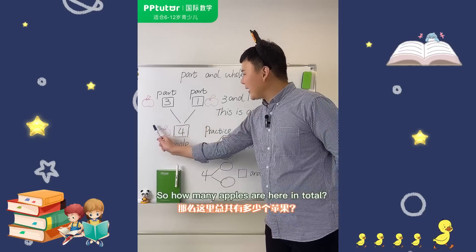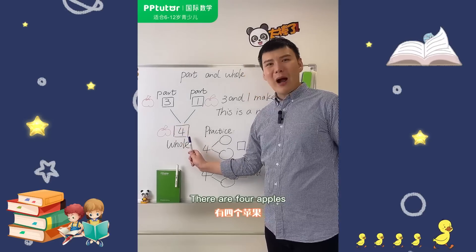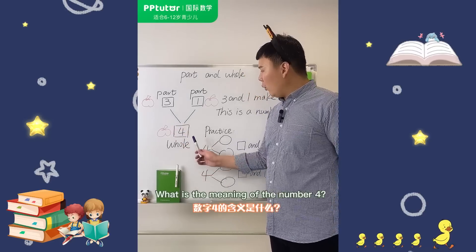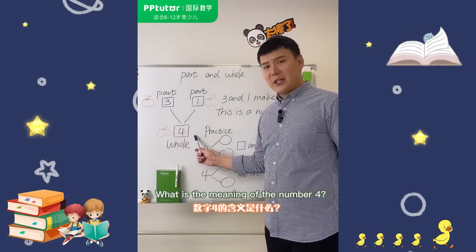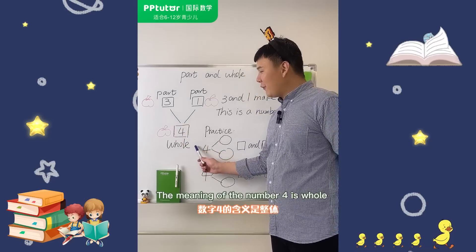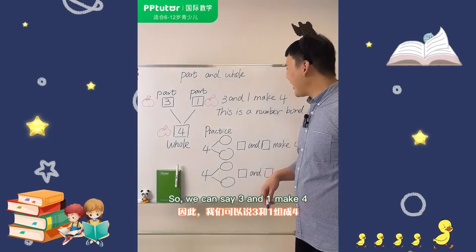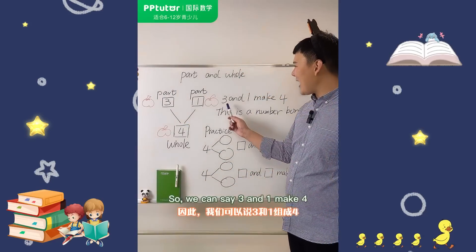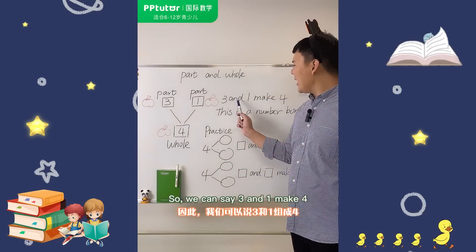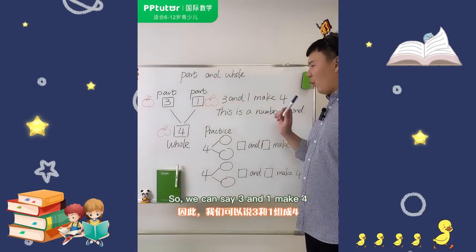So how many apples are there in total? There are four apples. Now what's the meaning of the number four? The meaning of the number four is the whole. So we can say three and one make four.